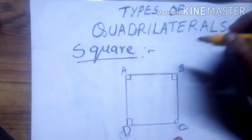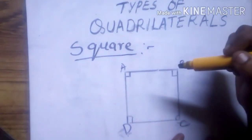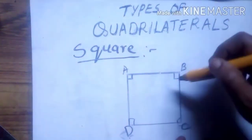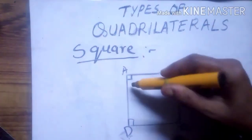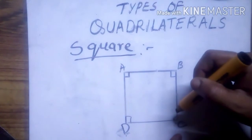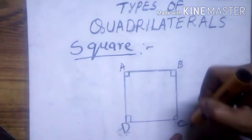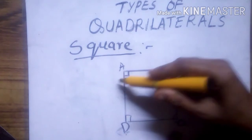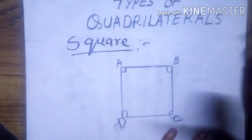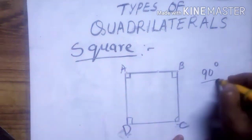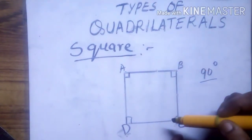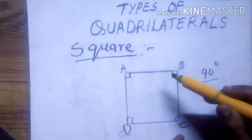Next is square. In a square, all sides are equal and all angles are 90 degrees. The sides AB, BC, CD, and DA are all equal. Angles A, B, C, and D are each 90 degrees. The opposite sides of a square are also parallel.